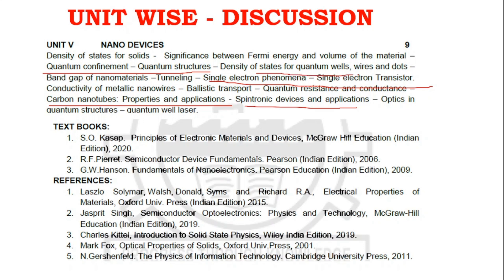Density of states in quantum wells, wires, and dots — about 4 to 5 questions will come from this area. In Units 2 and 5, you will study about 4 questions each, and the 5th question is just to go through. Study 2 to 3 questions from the important topics if you want a clear pass.